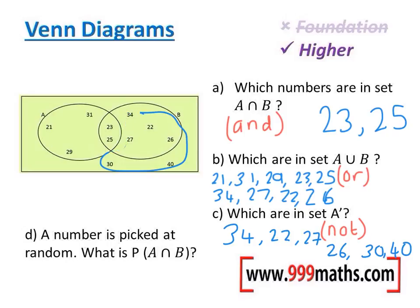Right, question D. A number is picked at random. What is P(A ∩ B)? That just means the probability of picking a number from A and B. Well, we know from the top that A and B, up here, there are two numbers.